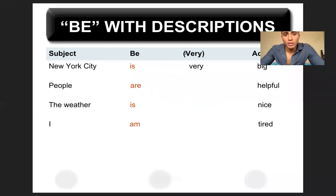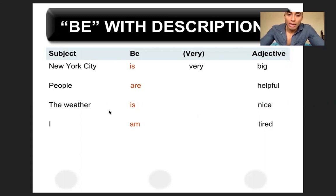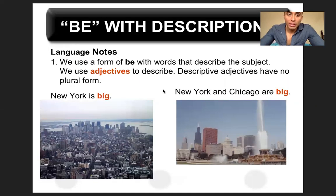Tenemos be with descriptions. Como les dije, el verbo to be lo usamos para hablar de descripciones. New York is very big, people are helpful, the water is nice, I am tired. Para describir siempre usamos adjetivos — una palabra que modifica el sustantivo: algo grande, pequeño, lindo, etc. Nueva York es muy grande, la gente es colaborativa, el agua es bonita, y yo estoy cansado. New York is big — singular. New York and Chicago are big — plural. Aquí usamos is para singular y are para plural.